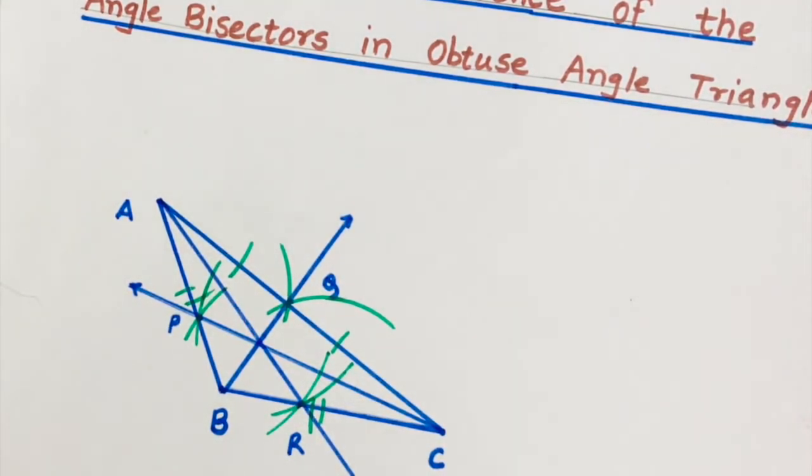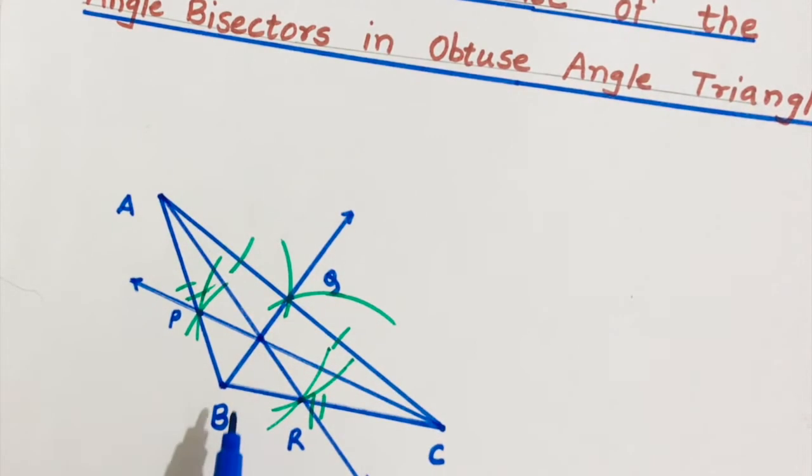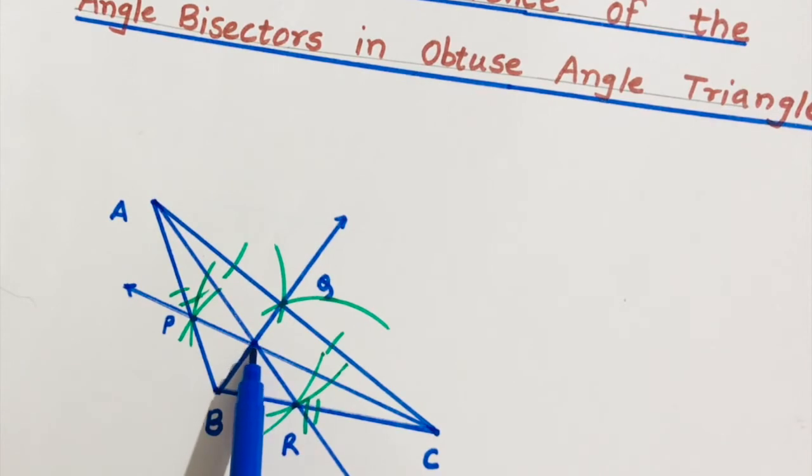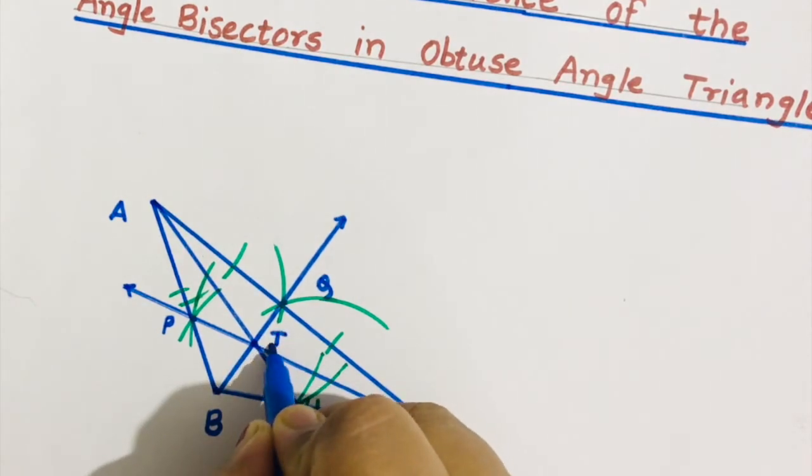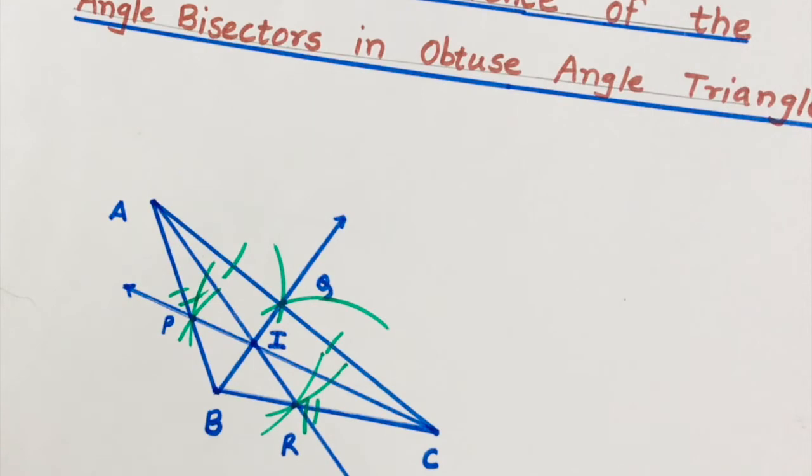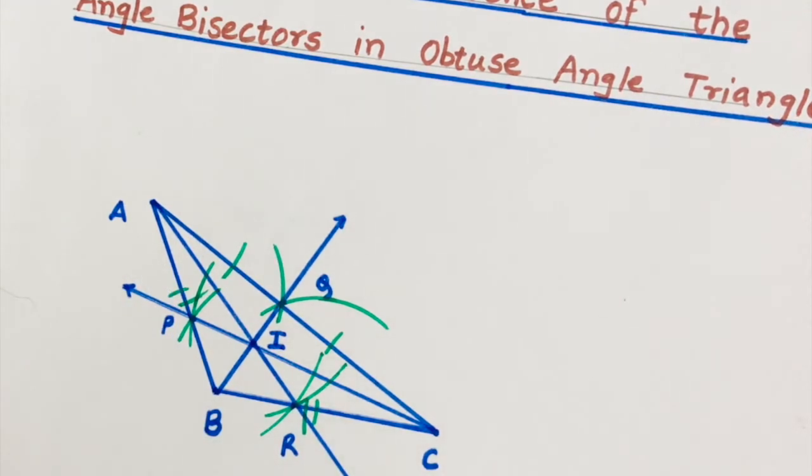Now you can see all these three rays are intersecting, are meeting at this point. So we will name this point as I. So we can see that in an obtuse angle triangle, point of concurrence of the angle bisectors lie in their interior. It means inside the triangle.